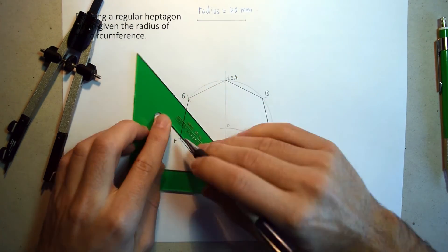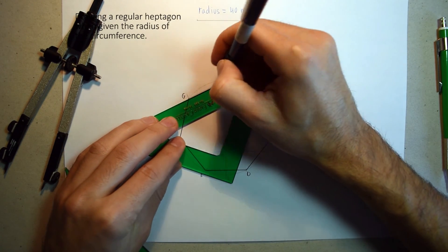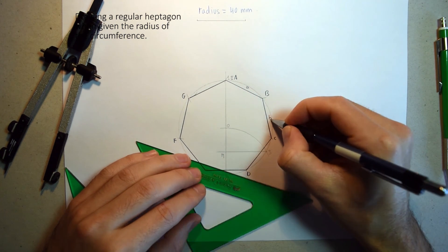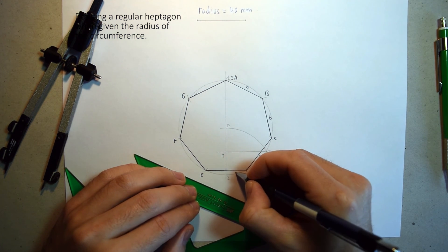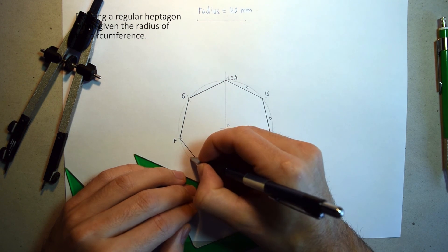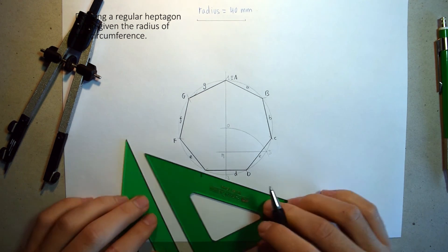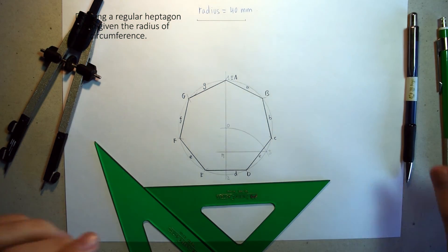With pencil, this will be A, B, C, D, E, F, G. And that's all. This is the regular heptagon.